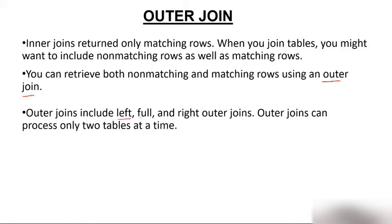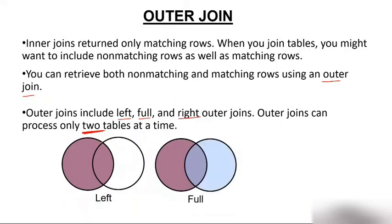Outer join includes left, full, and right outer joins. A very important point: outer join can process only two tables at a time, but inner join can process 256 tables at a time.